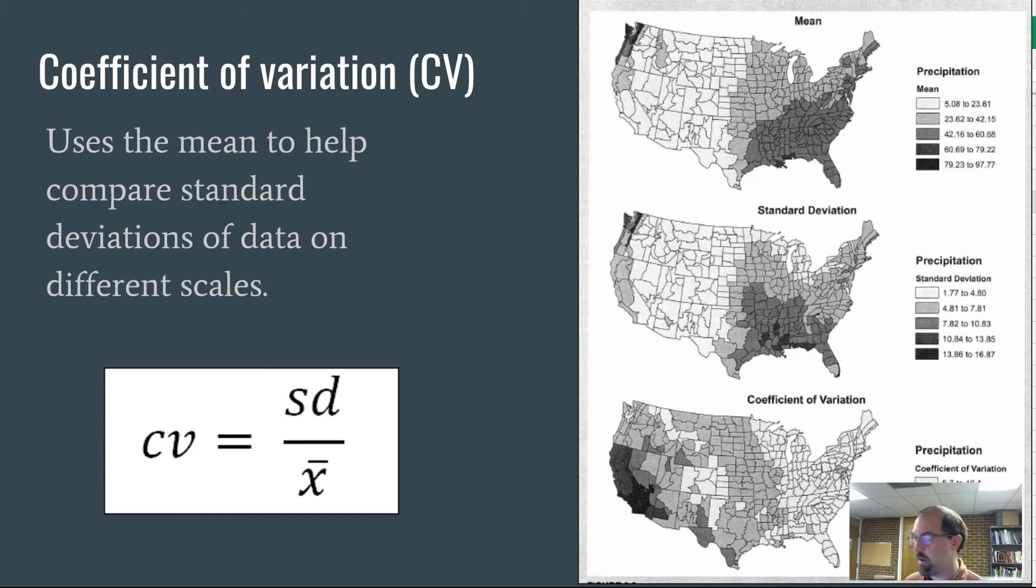But standard deviation doesn't tell us everything. We also have something called the coefficient of variation. The coefficient of variation allows us to compare standard deviations with different means. A really easy example I sometimes use is like the SAT versus ACT. Standard deviation of both of those are hard to compare.